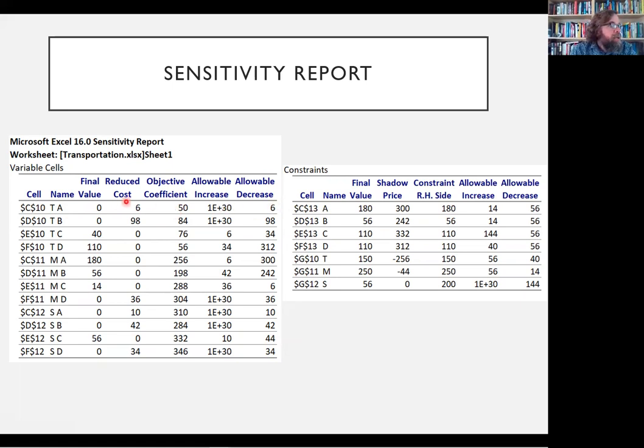But if we decrease the six from six and we decrease it down to zero, then the answer about how much to ship from where to where would change. So similarly here, like the amount from T to C, we're using 40 units right now. And the cost is $76 per unit. If that 76 were to increase by six units and go to 82, then all bets are off. And we would have to just change the parameters and rerun the linear program. Similarly, if we decreased the 76 by 34, so down to 42 or less, we'd have to resolve the linear program.